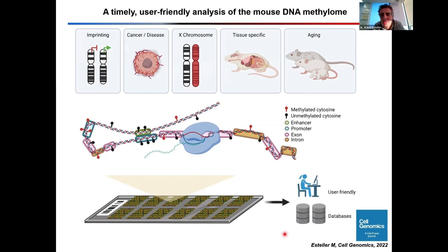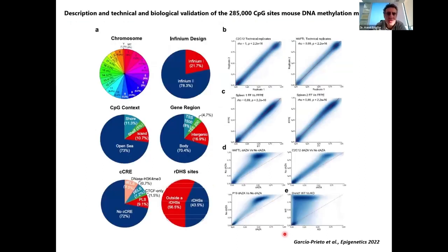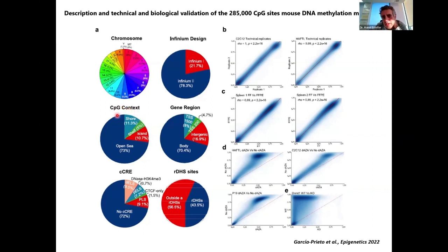I really encourage everyone to deposit mouse DNA methylation data using the newly developed array. Looking at the array composition, it has coverage from all chromosomes including Y, X, and mitochondrial DNA. Most probes are Infinium Type II, with only a minority being Infinium Type I. Looking at the CpG context, most are in what we call 'open sea' — intergenic regions — using the terminology coined by Andy Feinberg for CpG islands, shores, and shelves.